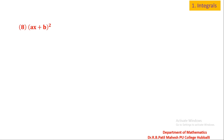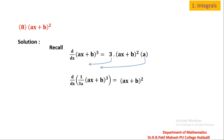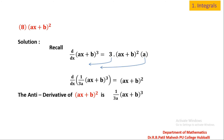Next example: anti-derivative of (ax + b)². To find it, recall d/dx of (ax + b)³. Using the chain rule: 3(ax + b)² × a. I want only (ax + b)², so taking 3 and a to the left side gives d/dx of [1/(3a) × (ax + b)³] equal to (ax + b)². Derivative of (1/3a)(ax + b)³ is (ax + b)², and the anti-derivative of (ax + b)² is (1/3a)(ax + b)³.